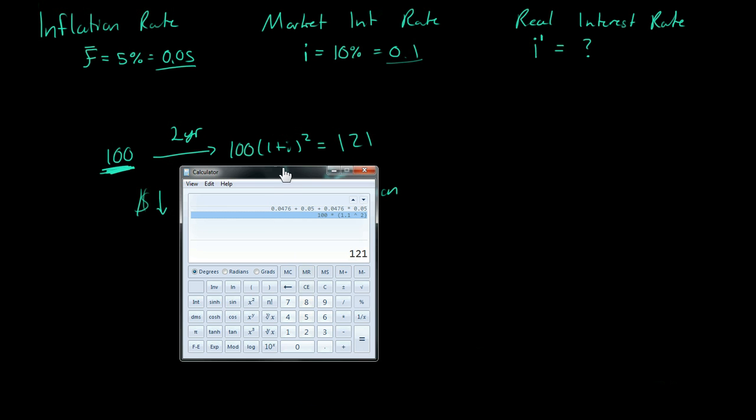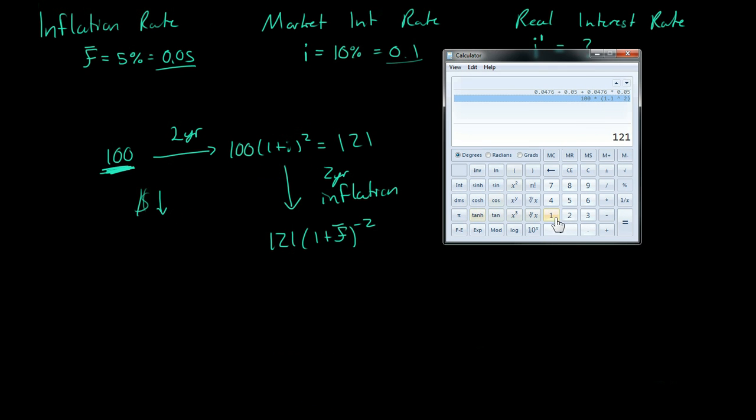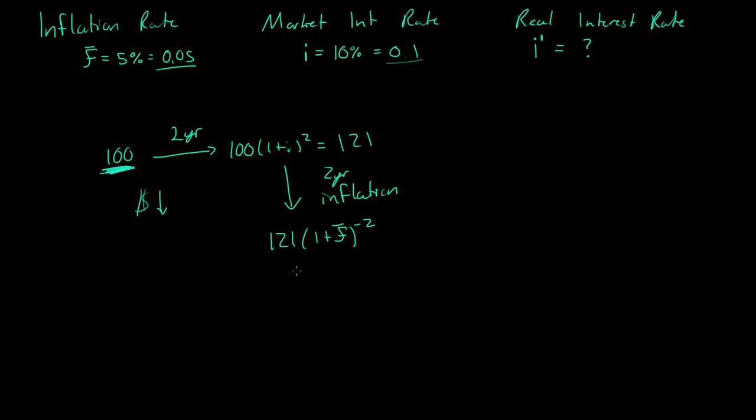So now, let's plug that in. So we have 121 times 1.05 to the power of a negative 2. A negative 2. And that is equal to $109.75. So that is equal to $109.75.